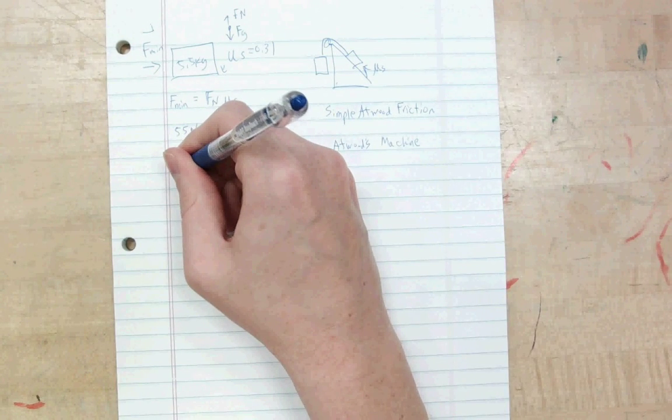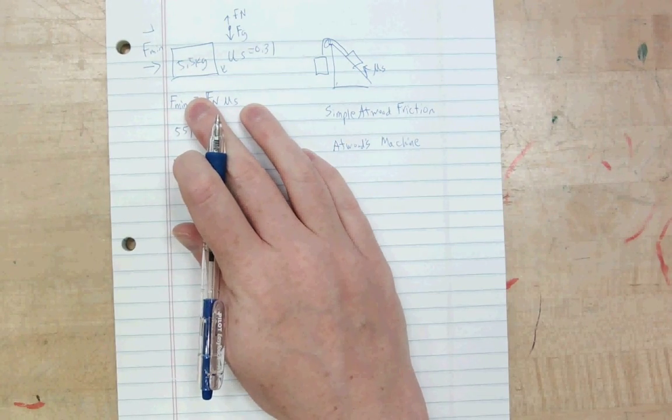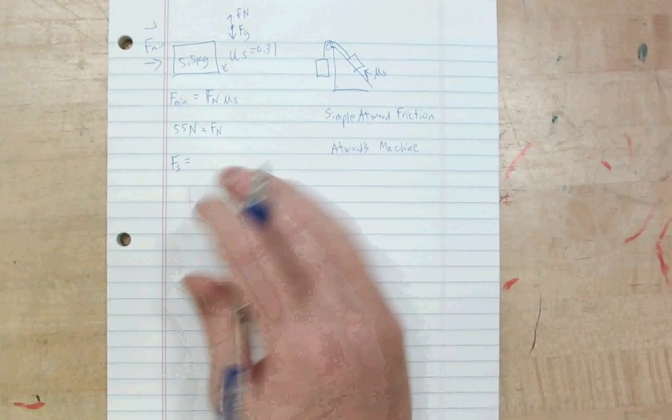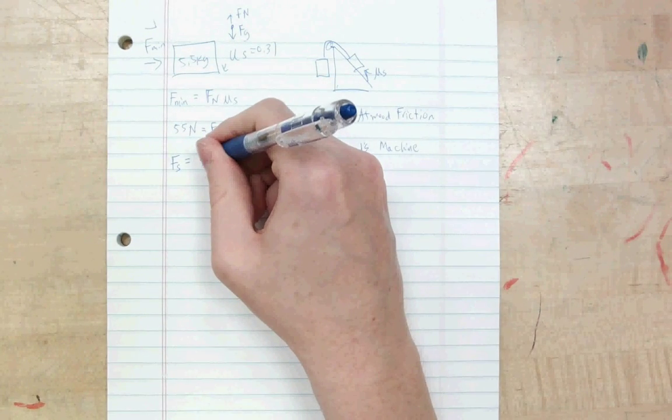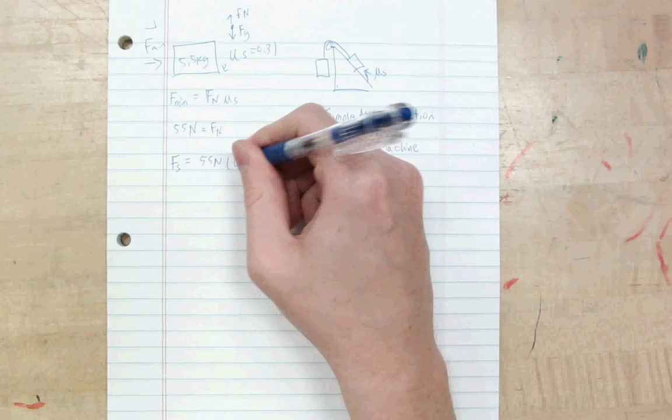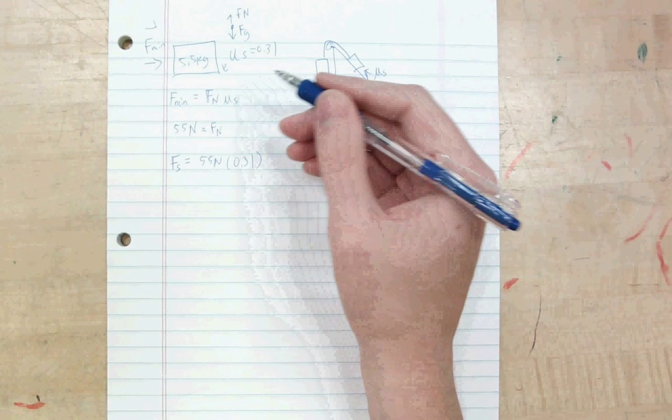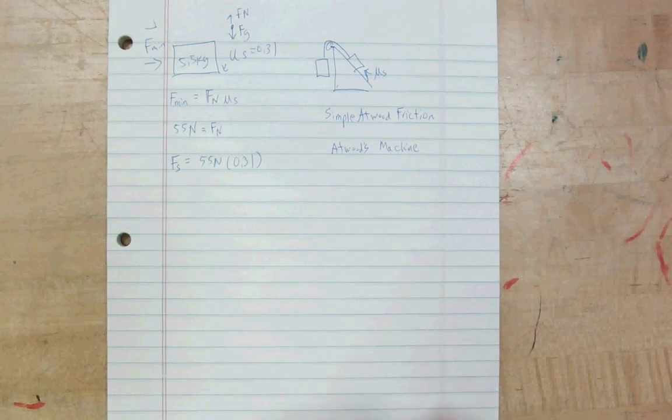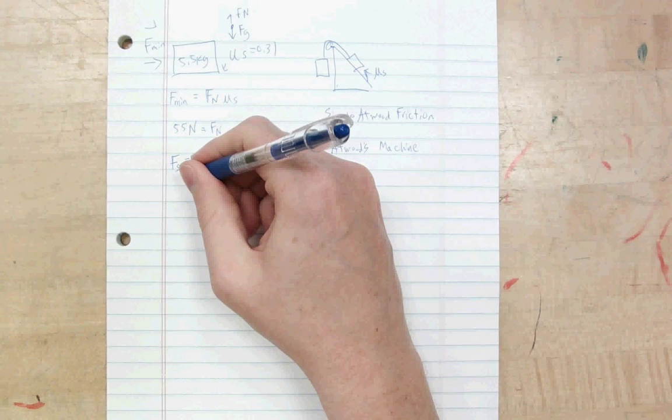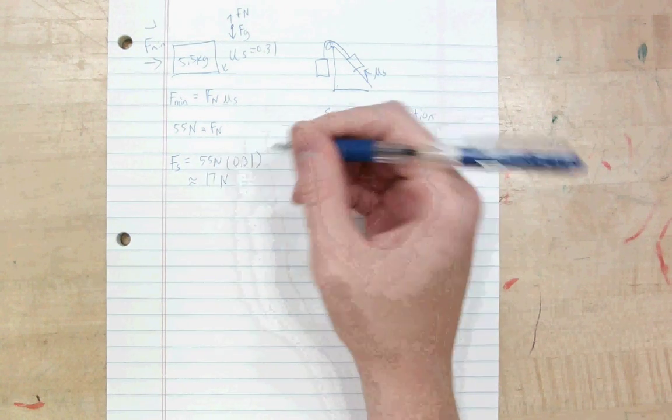And now I can do my static frictional force, which would be equal to, or slightly less than, the minimal amount I need to push to get this block going. That would be 55 times 0.31, the coefficient of static friction. So I'm just filling in this equation. And if I do that out, 55 times 0.31, I get about 17 newtons.